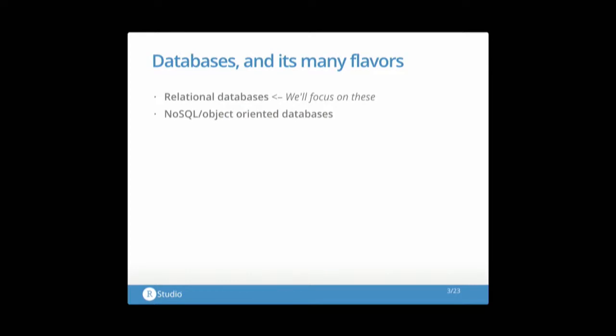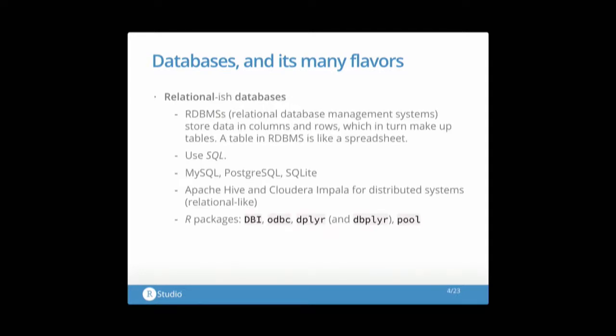Databases. At the risk of oversimplifying, you can think of databases as being in one of two categories. There are relational databases, and then there are the newer NoSQL or object-oriented databases. We'll focus on the first one, mostly for historical reasons — they've been around longer, and the infrastructure around them in general, not just in R, is stronger. Relational databases and their management systems store data in columns and rows, which make up tables. It looks spreadsheet-like.